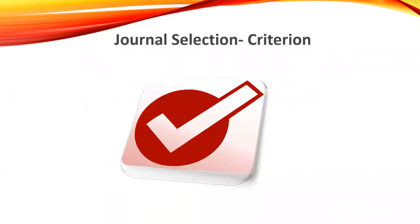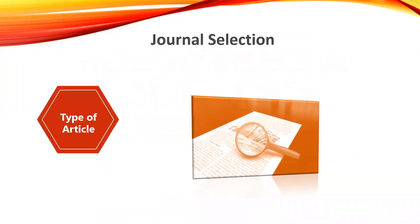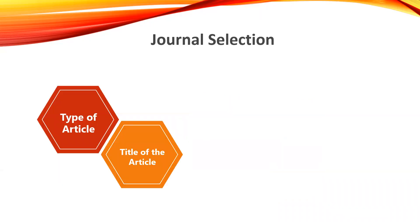The very first thing is what is the type of article for the purpose of selection. We have to look for whether the article is an original experimental one, or experimental as well as theoretical, or a case report, or a review paper. First of all, identify which type of article it is, and then work on the title of the article.